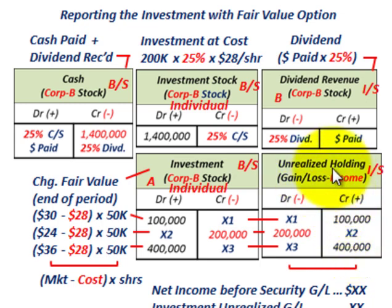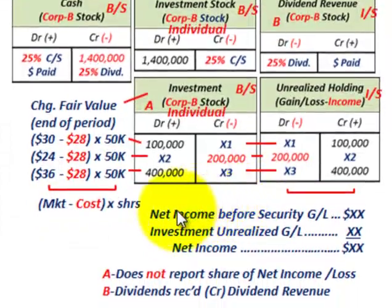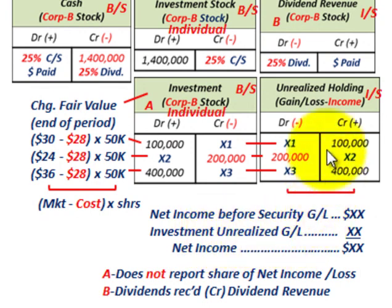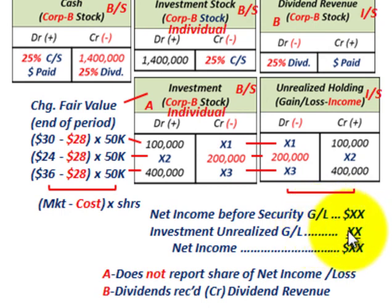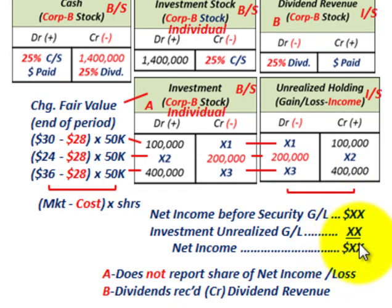The unrealized holding gain or loss goes to the income statement and is recognized as income. On the income statement, we have net income before our securities gain or loss, then add or subtract the unrealized gain or loss for the investment — the unrealized holding gain or loss — to arrive at total net income, which includes both the income before securities and the unrealized gain or loss on the held security.